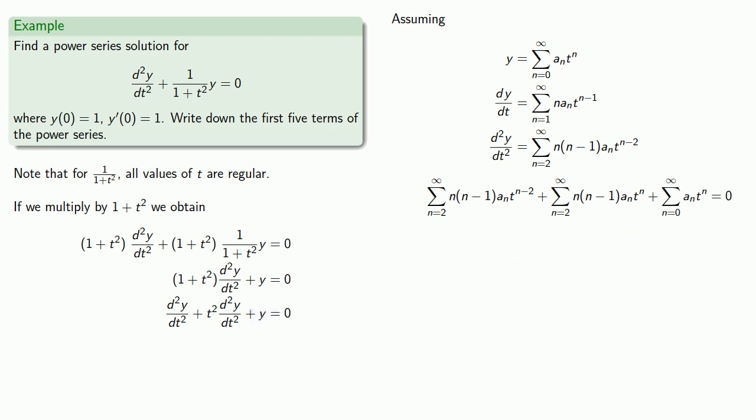So now to add these series, we'll first want to make sure the powers on t are the same. So these are both t to the n, but this one is t to power n minus 2. So let's adjust it.